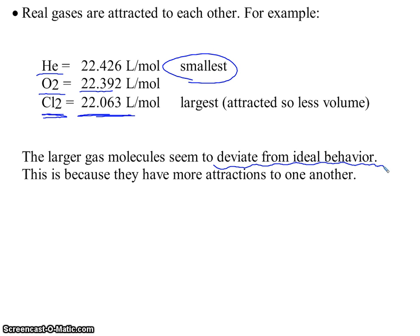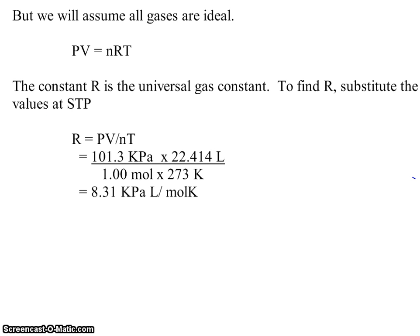Regardless, we're going to assume all gases are ideal. And the ideal gas law states that PV is equal to nRT. We're going to substitute to find this value called R. We're going to do that at STP, and R is going to become the universal gas constant for all gases behaving as ideal.